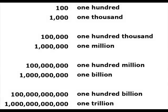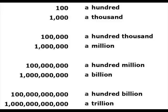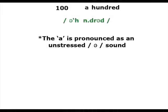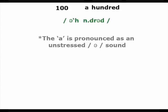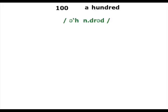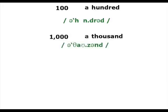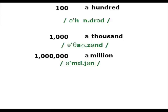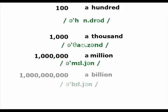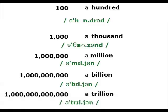In English, when you have one of something, you can use 'a' instead, where the letter 'a' is pronounced as an unstressed 'a' sound. A hundred. A thousand. A million. A billion. A trillion.